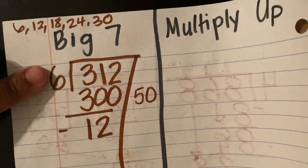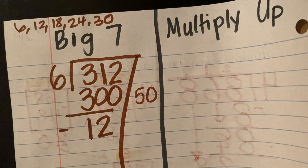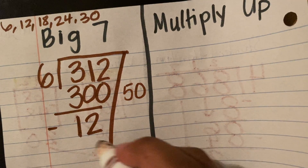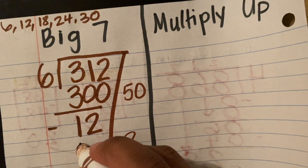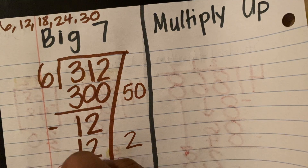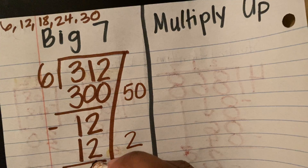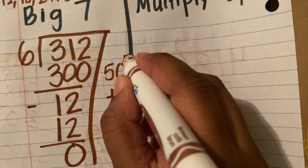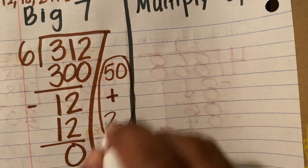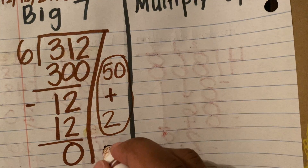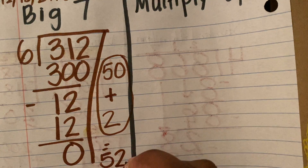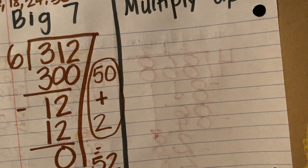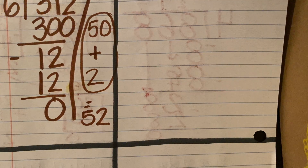Now I ask myself: six times what will get me as close as possible to 12? I know that that is two. I will put my two here and subtract — 12 minus 12 is zero. I see that I am finished. To get my answer, I'm going to add the numbers on the side: 50 plus two, and that is 52. Therefore, my quotient is 52. Monique will need to prepare 52 tables.